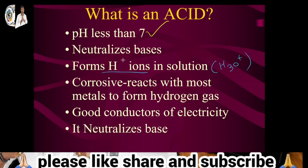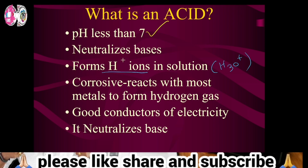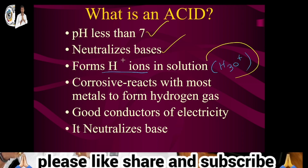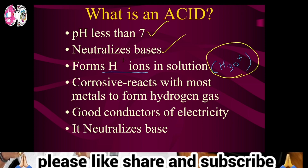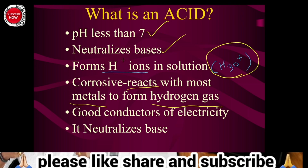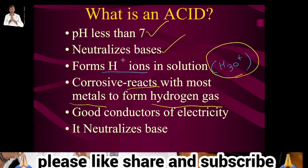H3O plus ions are present in the solution. These H3O plus ions are called hydronium ions. H3O plus ions — this is the common property for acids and bases. Acids react with metals and form hydrogen gas. This is activity one.